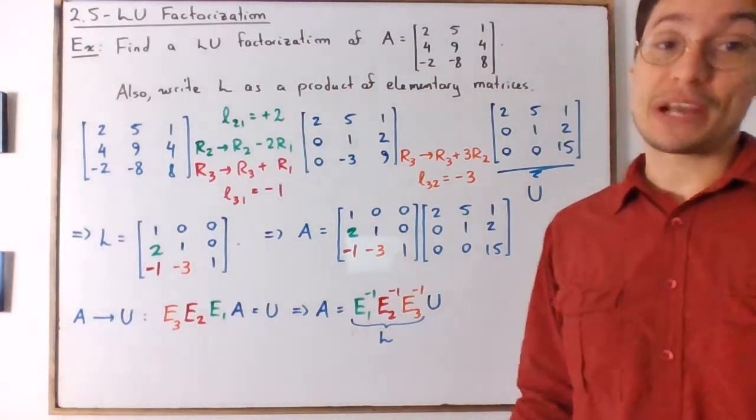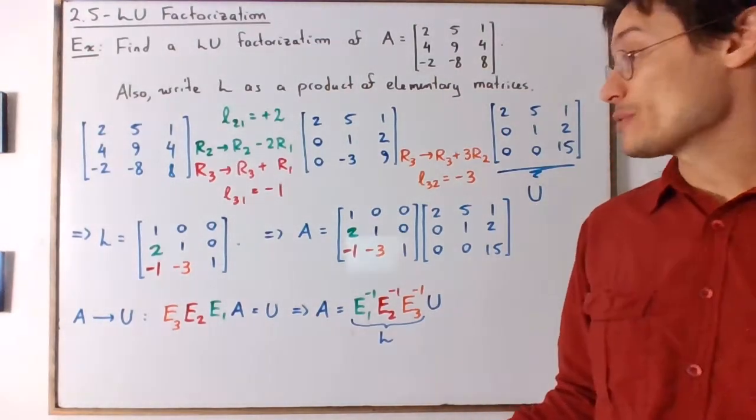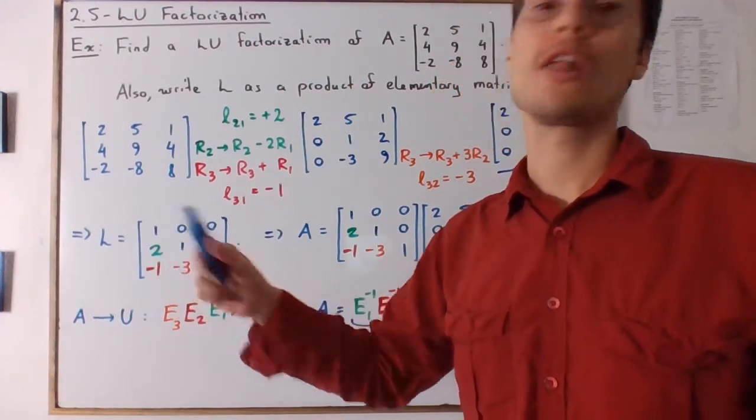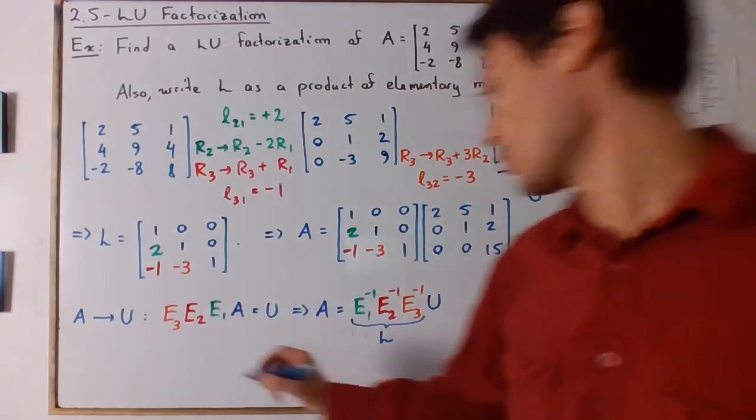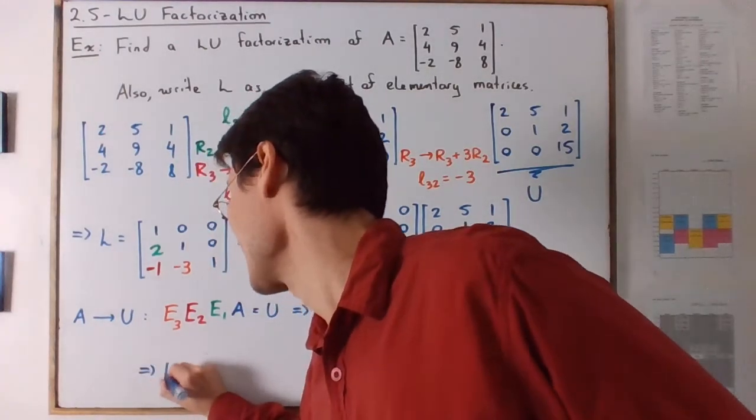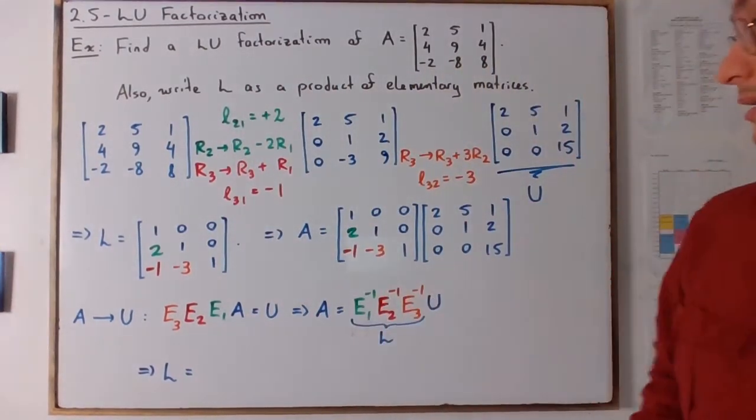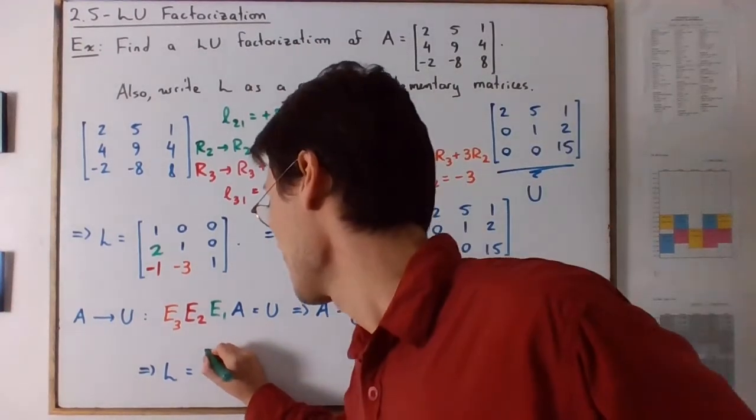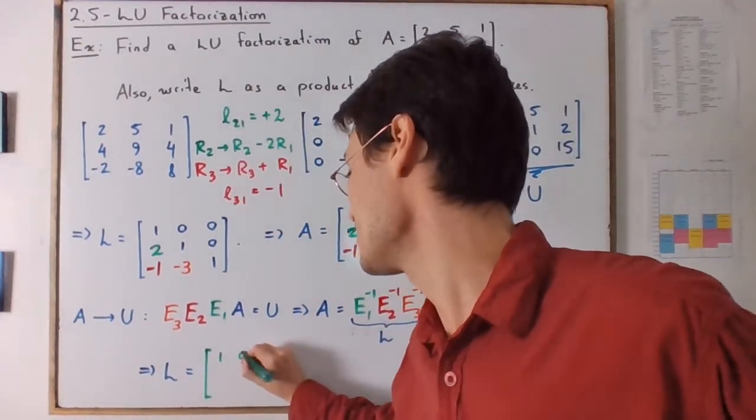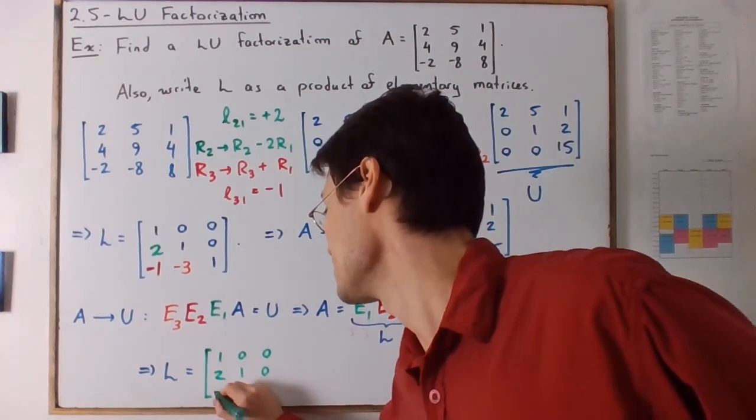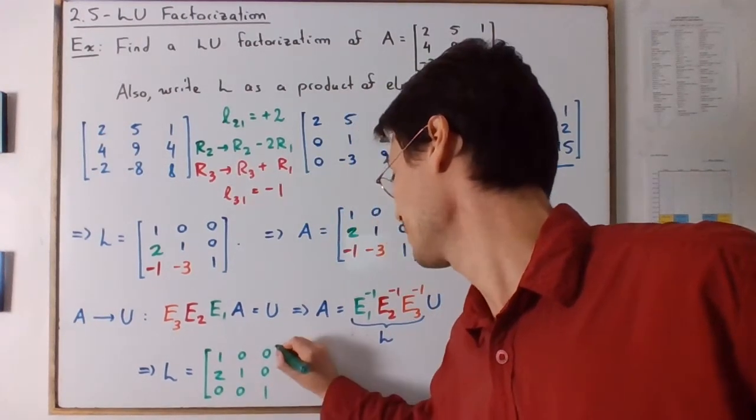Now, it's easy to recover all of these elementary matrices because we have their entries, 2, negative 1, 3. So in other words, we have our answer that L is going to be equal to E1 inverse. Meaning 1, 0, 0, 2, 1, 0, 0, 0, 1.